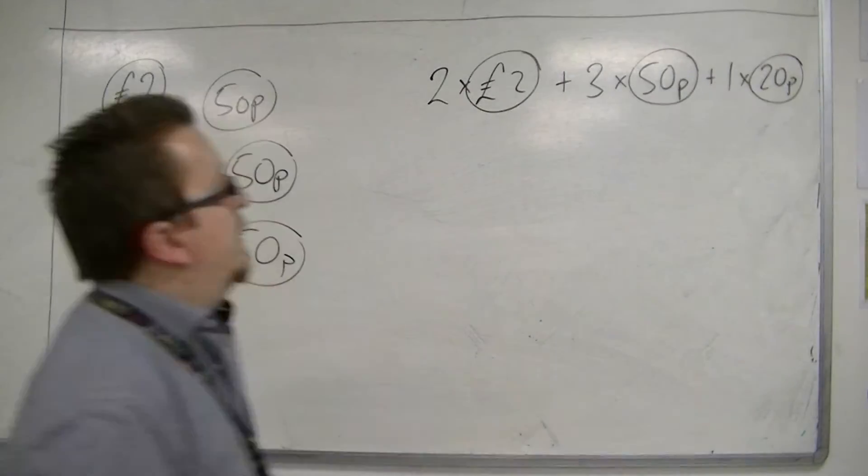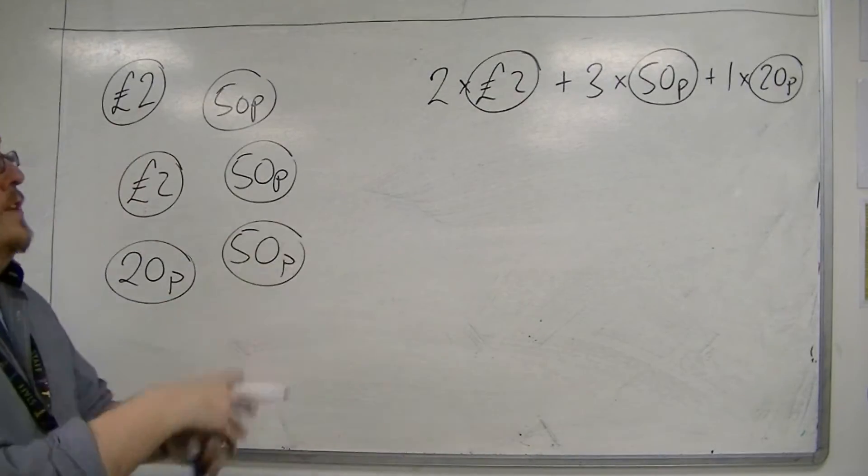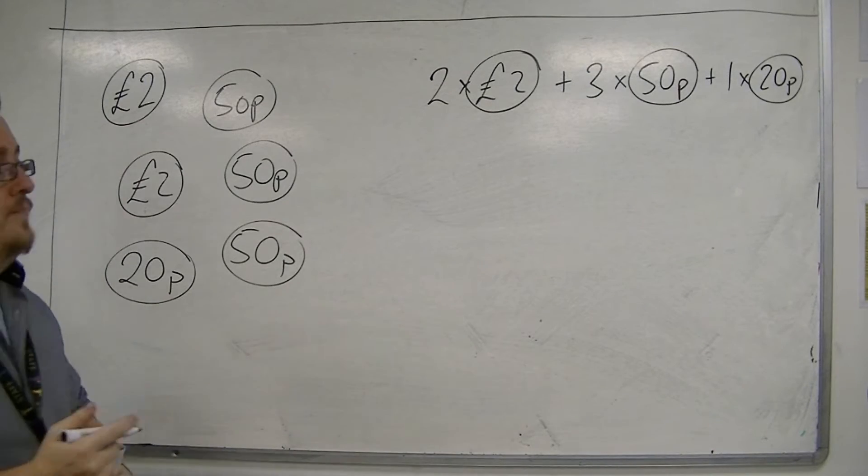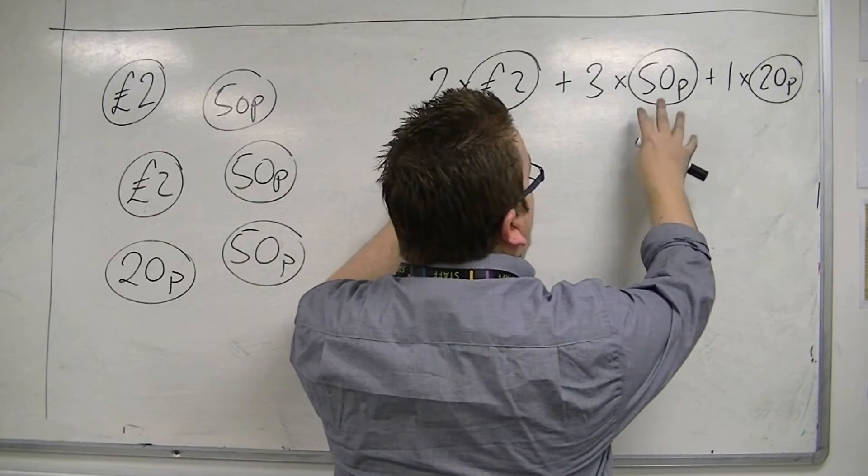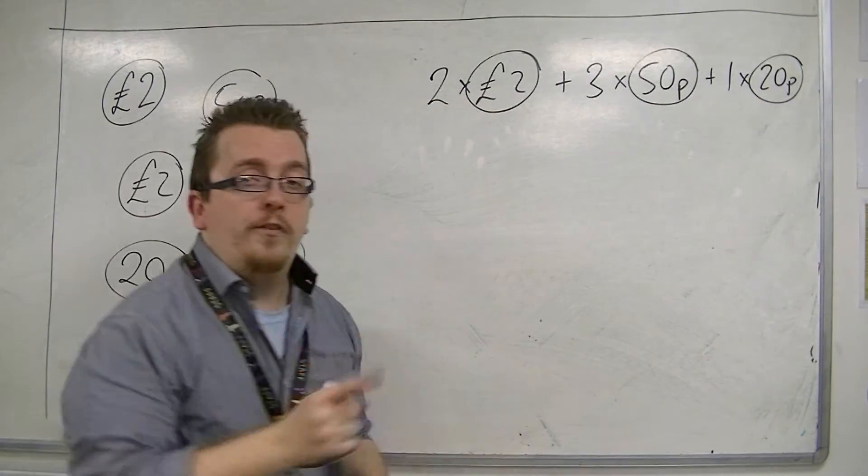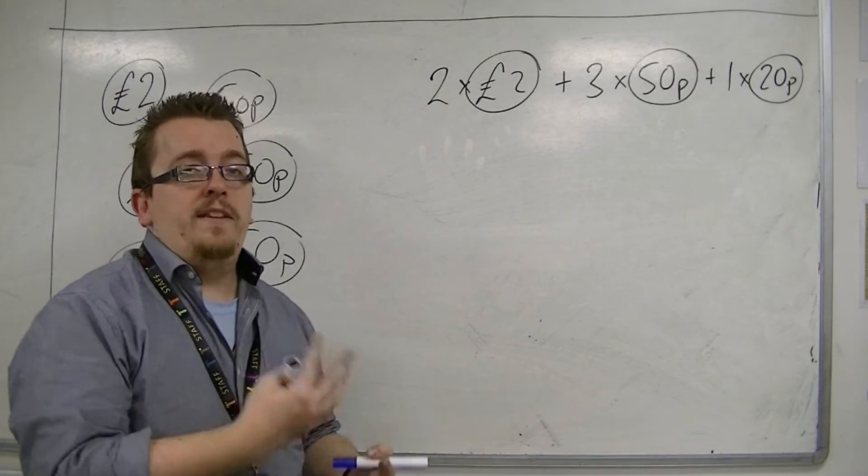So you've got two £2 coins, three 50p coins, and one 20p coin. And then I can say, well that's £4, that's another £1.50, £5.50, plus the 20p is £5.70. And that would be my method of adding these things together.